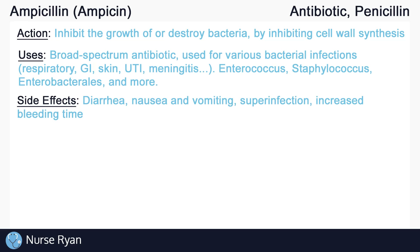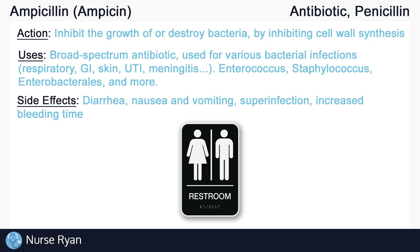Some of the possible side effects of ampicillin include diarrhea, nausea and vomiting, superinfection, and increased bleeding time. Superinfections are infections occurring after or on top of another infection, and are thought to be caused by damage to the host flora, which normally prevent the growth of pathogenic organisms. Antibiotic-associated diarrhea, which is usually three or more loose watery stools per day, is common when starting penicillin antibiotics and should improve once the antibiotic is completed.